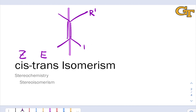Or the groups can be on opposite sides of the double bond, and this is what we call trans. Those terms can be used to refer to the molecule itself as a whole, or the relationship between the groups. So for example here we would say R1 and R2 are trans, and the two remaining hydrogens are also trans.